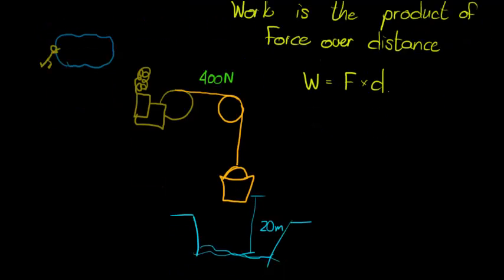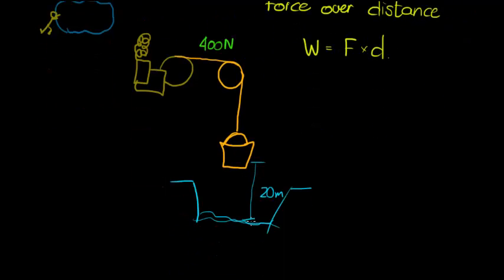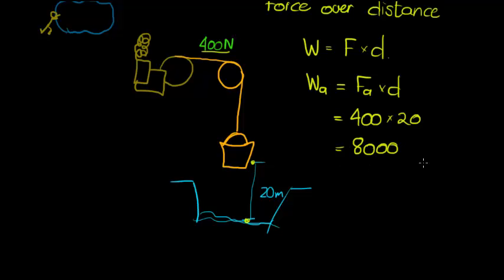That would be the amount of work that is being done. So, we are displacing this bucket for 20 meters with an applied force of 400 newtons. In other words, the applied work is equal to the applied force times the distance that that bucket has moved. So the applied force is 400 newtons, and the distance that it was applied over was 20. So, the total amount of work done is 8,000.